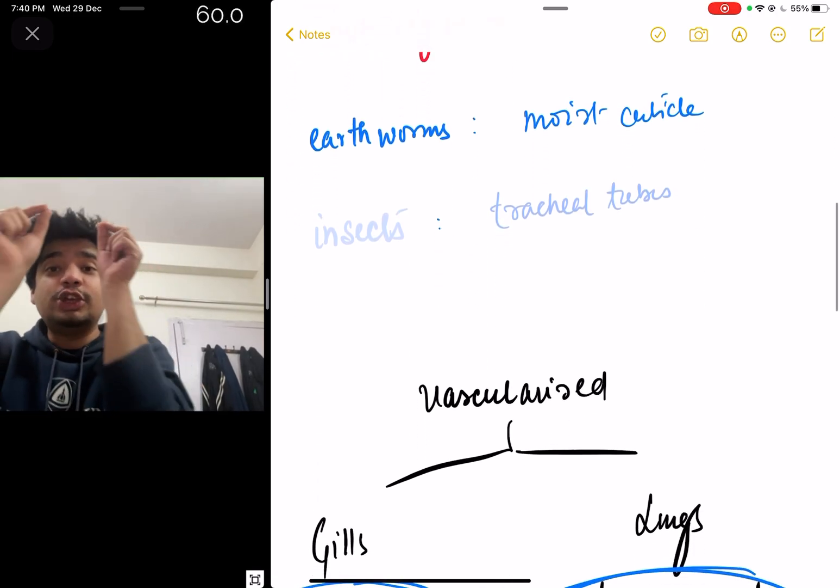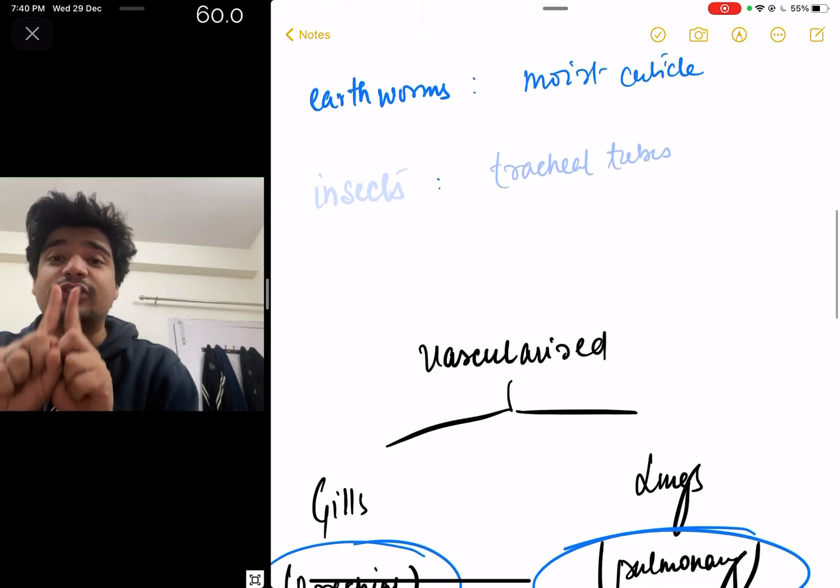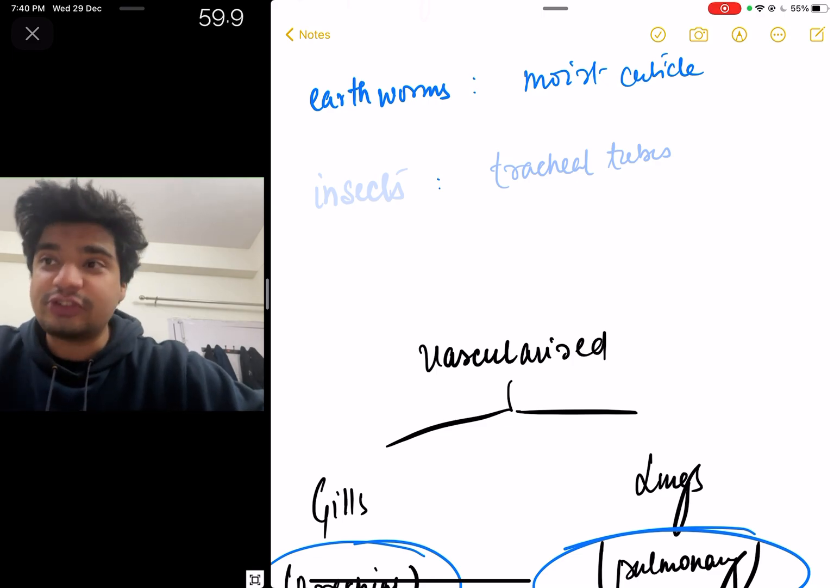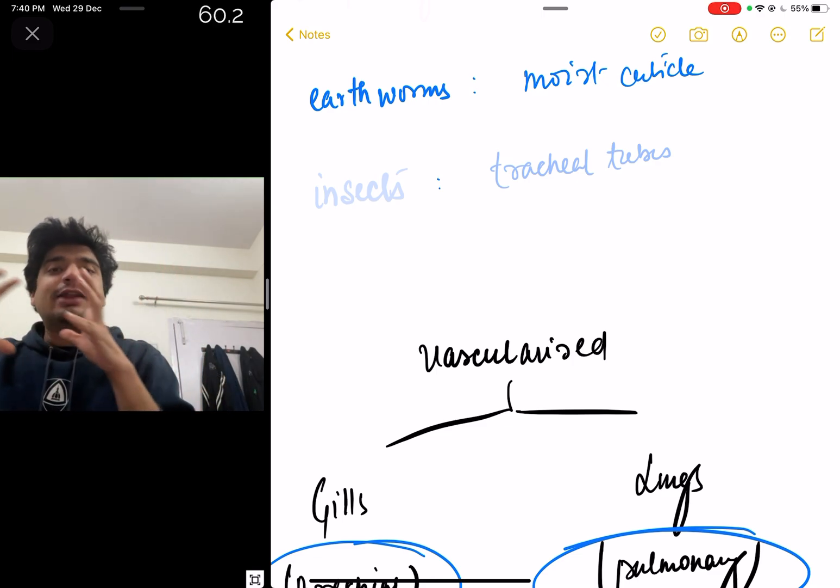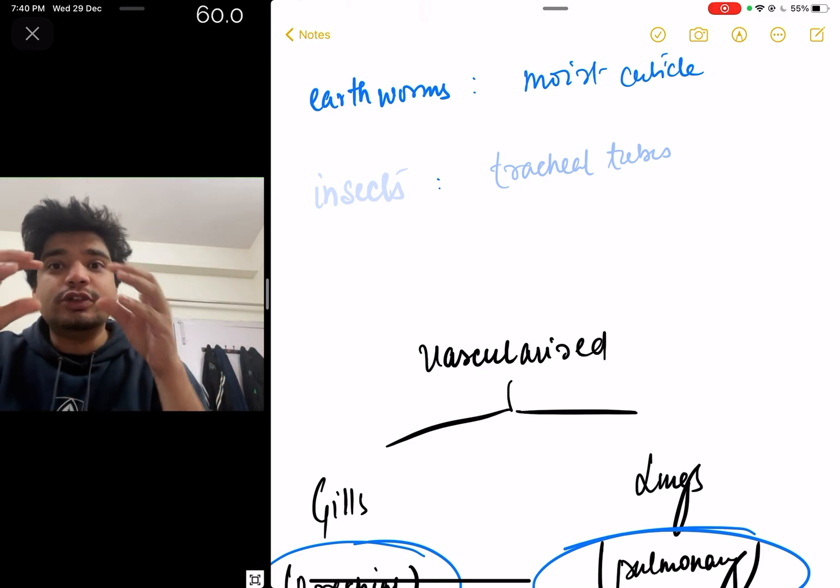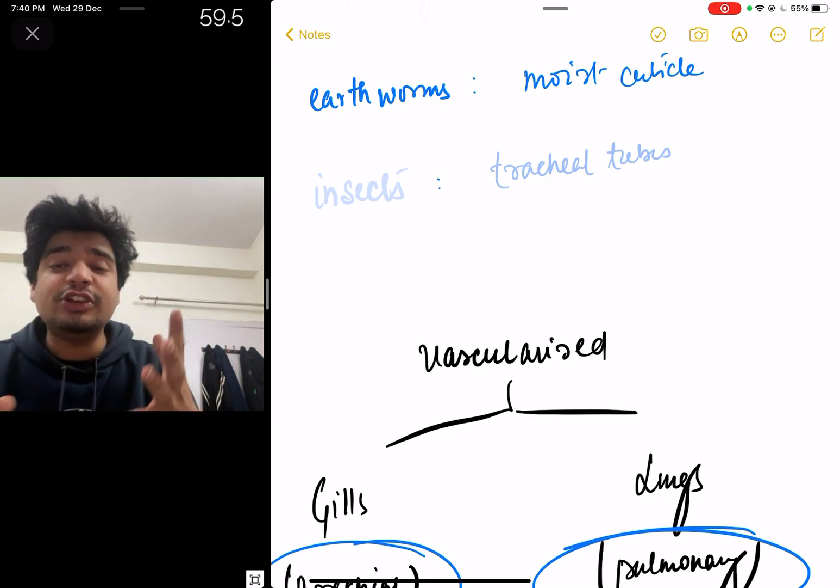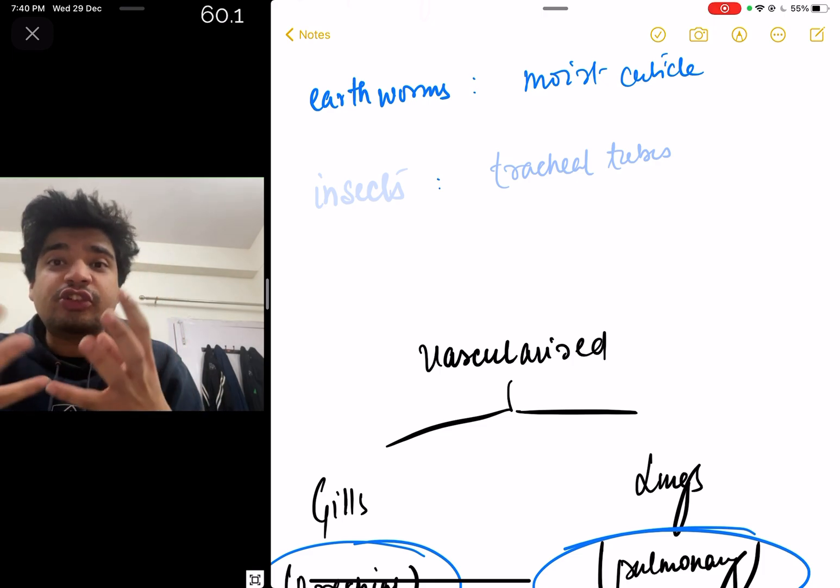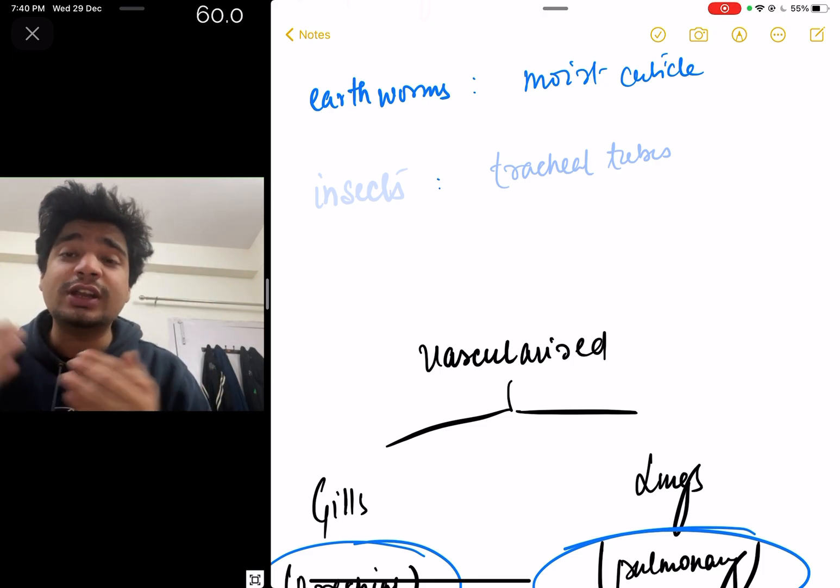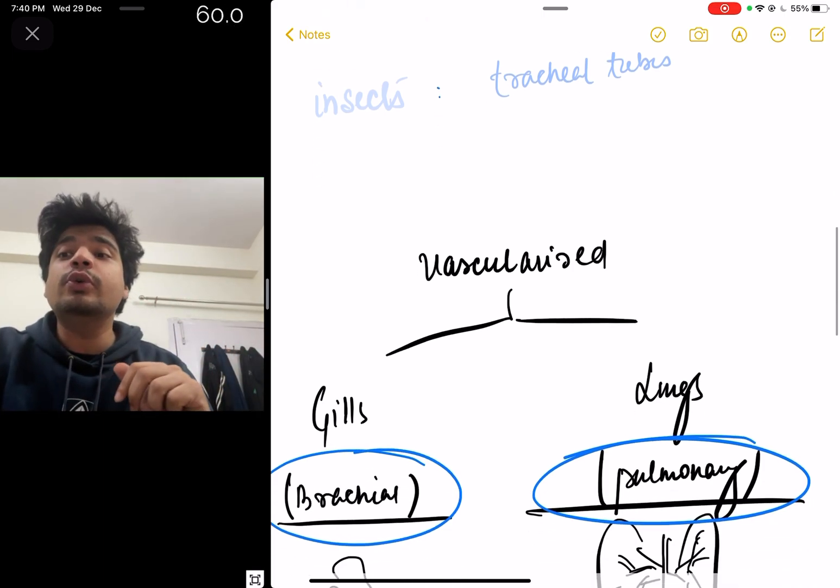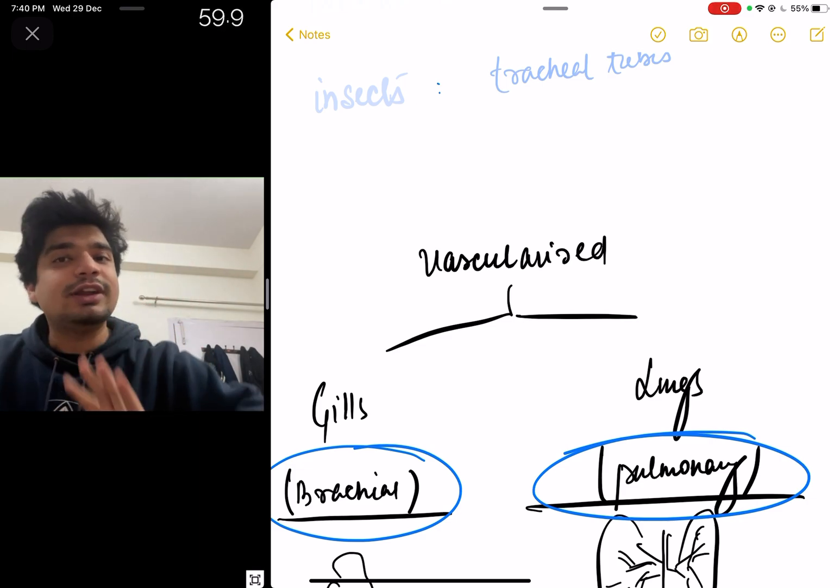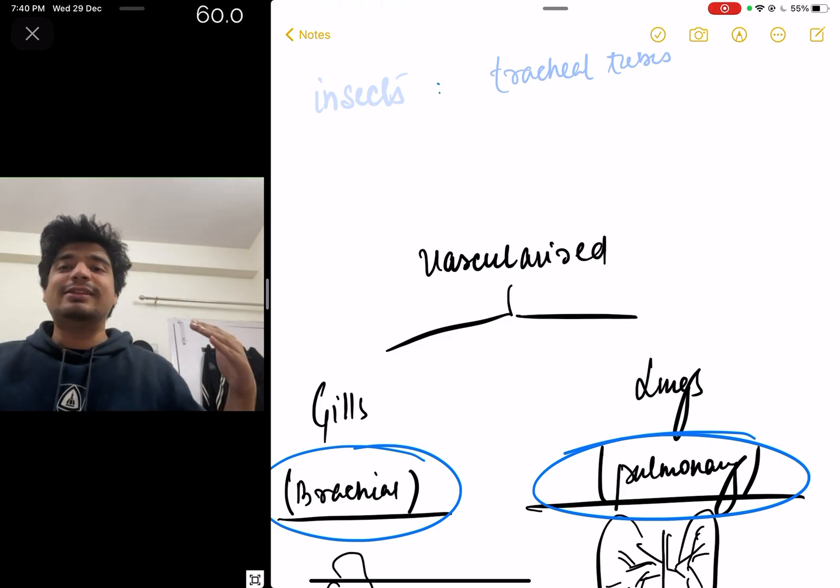Now coming to earthworms, earthworms have their cuticle, the moist cuticles that help in exchanging carbon dioxide out and oxygen in. Insects have something called as tracheal tubes. But as the organism becomes more complex, as the habitat of the organism changes, the structures, the organs that they use for this process of exchange of oxygen and carbon dioxide evolve. So what happens is the more complex organisms use some vascularized structures.